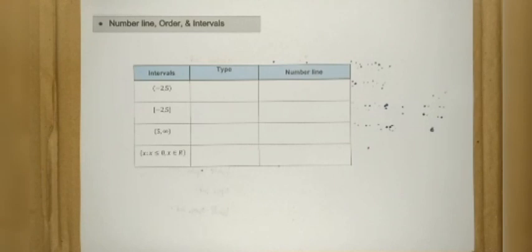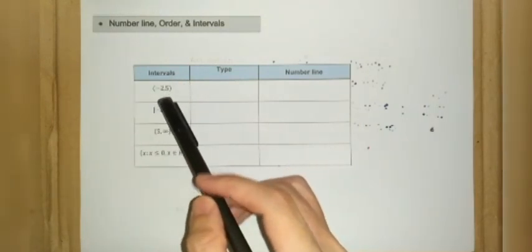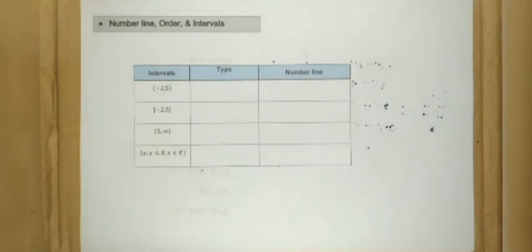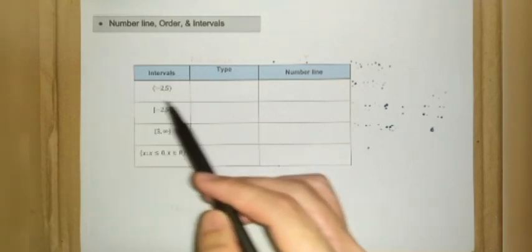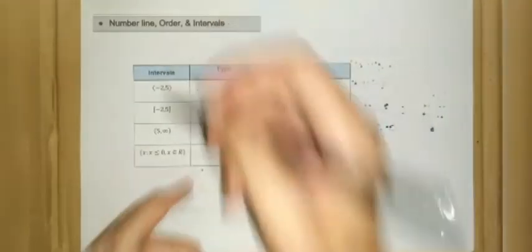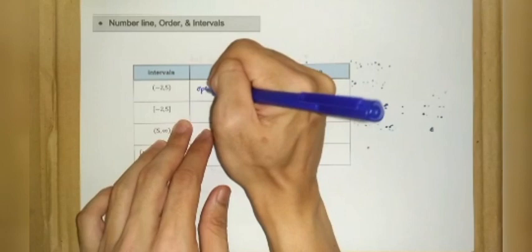Let's look at some examples on intervals. For the first one, the endpoints are negative 2 and 5, and this interval has round brackets for both endpoints. This interval notation is the open interval.